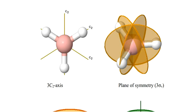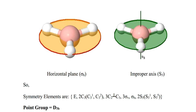There are three C2 axes perpendicular to the C3 axis. And three vertical planes of symmetry are present — the vertical plane is parallel to the principal axis of symmetry. The vertical plane bisects boron and one hydrogen, while the other two hydrogens reflect each other. There is also a horizontal plane of symmetry, which bisects all four atoms in the molecule. The horizontal plane of symmetry is perpendicular to the principal axis.